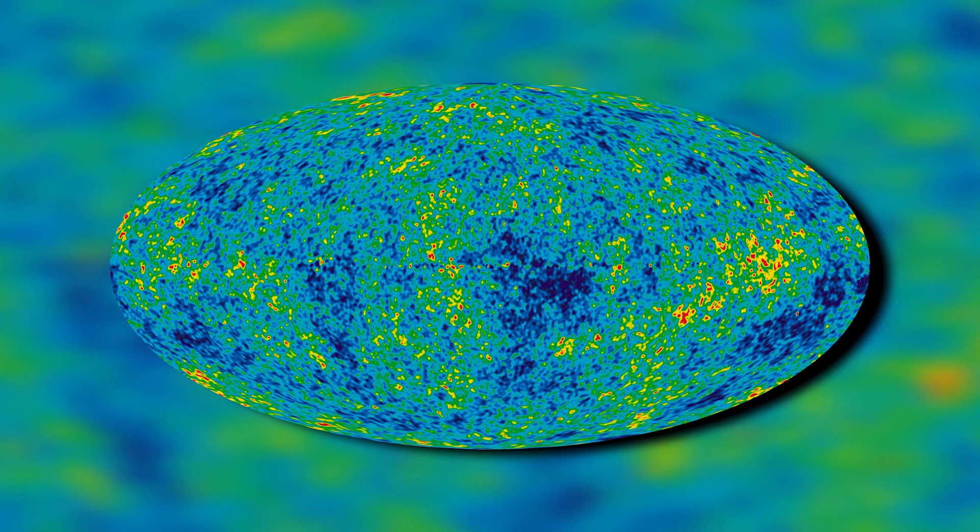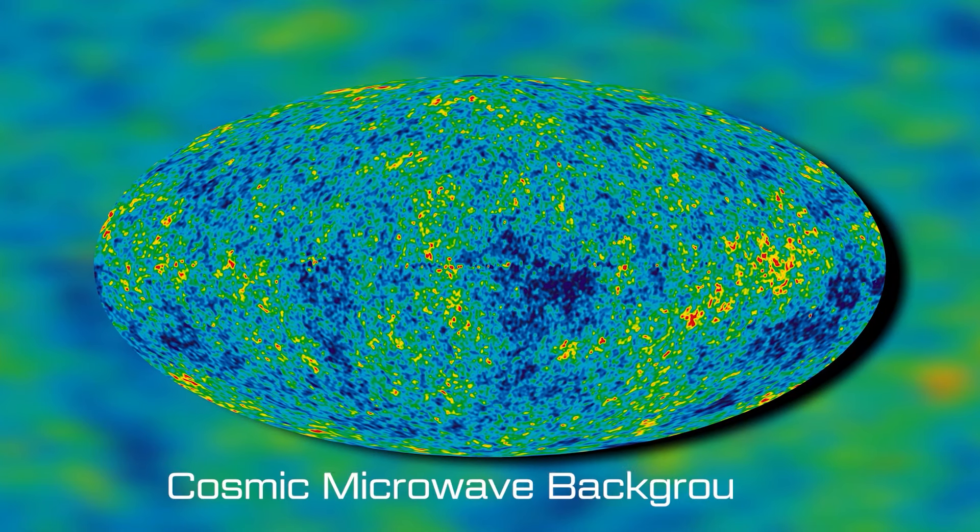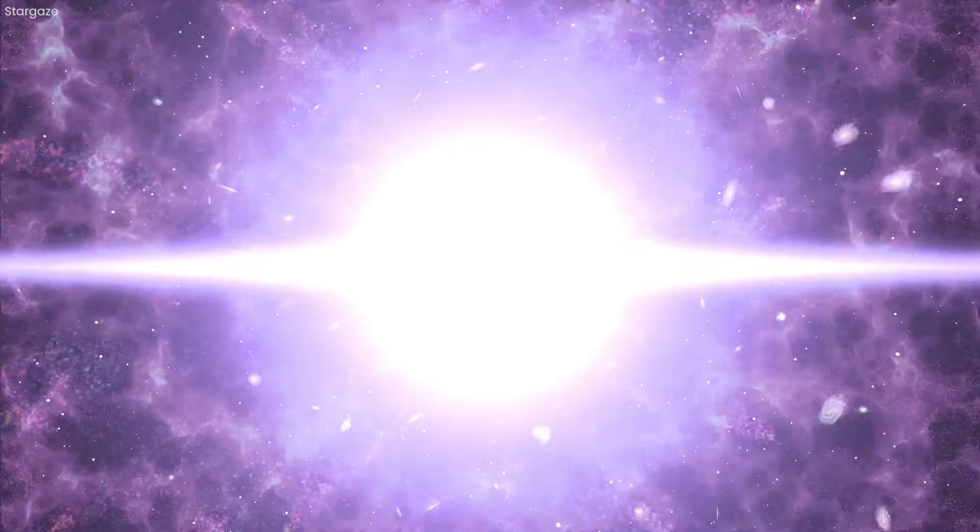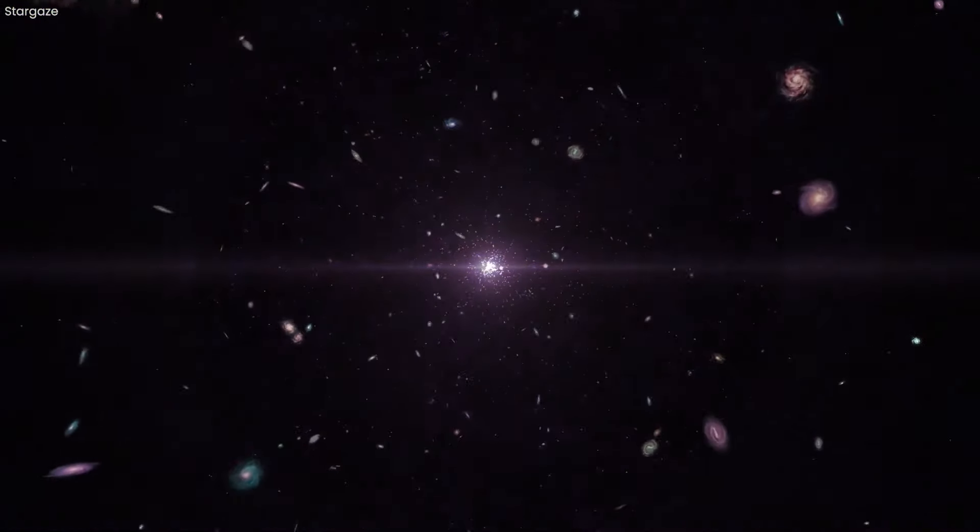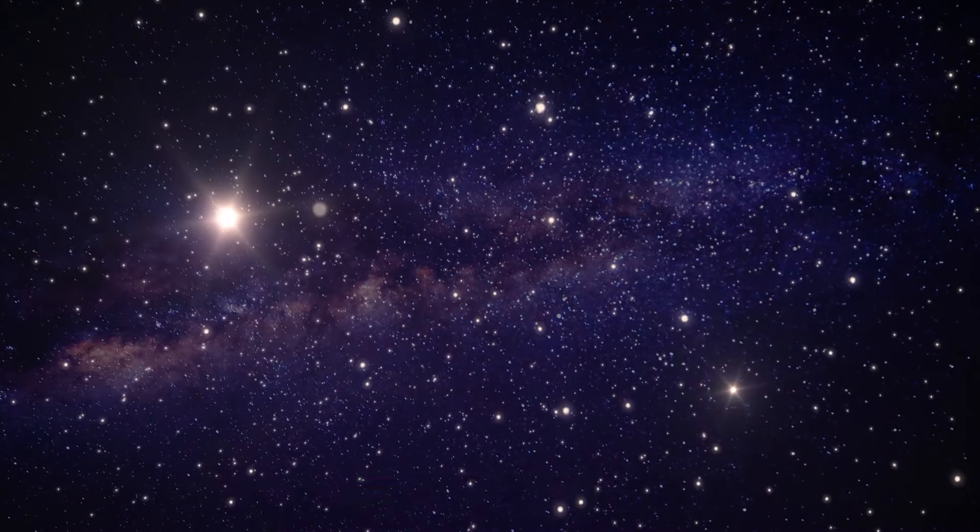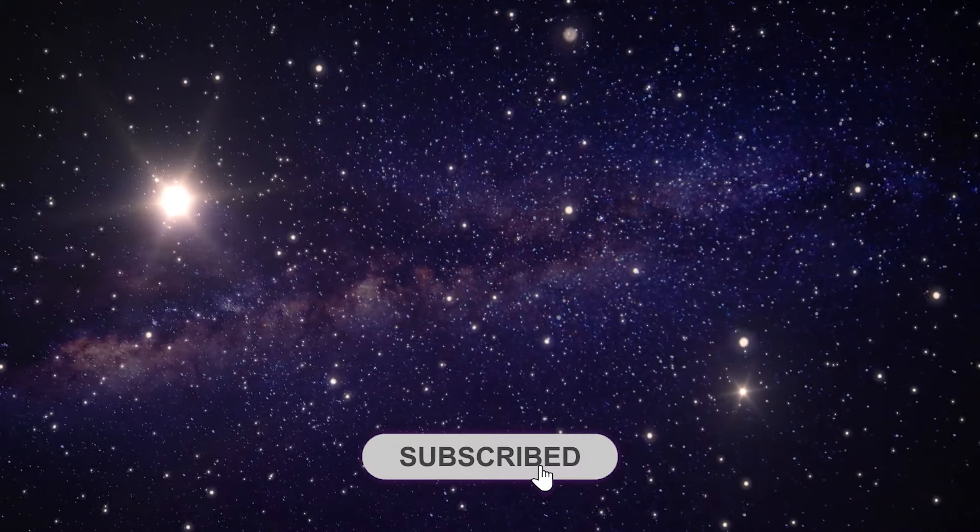The best clues to the shape of the universe are embedded in the cosmic microwave background, CMB, which is the afterglow of the big bang that radiates towards us from every direction.